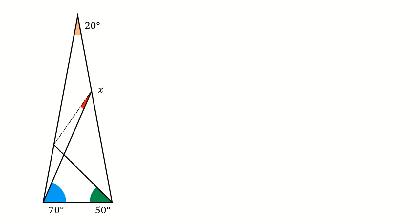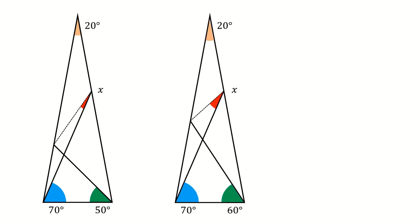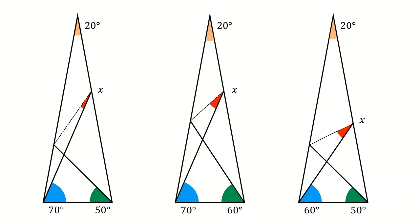There are different versions of this problem. For example, alpha and beta could be 70 and 50, and you want to know how much is x, or they could be 70 and 60, or in another version, they are 60 and 50.